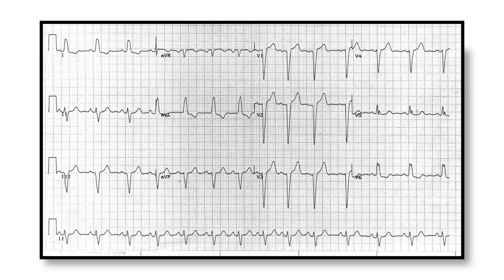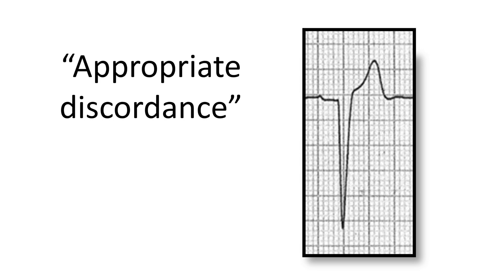Now it's often said that in the presence of left bundle branch block it's impossible to interpret ST segment changes on the ECG. But that's not true, and there are criteria available to help us recognise acute myocardial infarction in the setting of a left bundle branch block. To a large extent these criteria rely upon what is known as appropriate discordance.